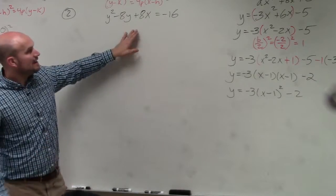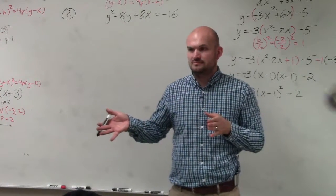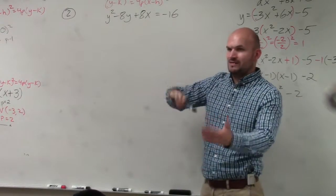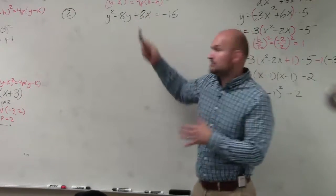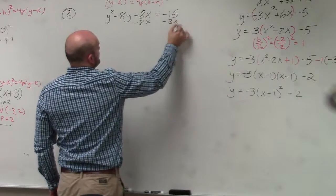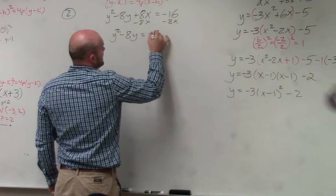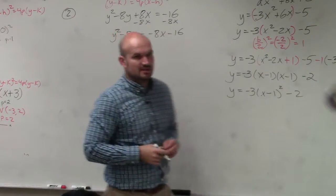All right, now notice, do you guys see how the y's are on one side, the x's are on the other side? All right, so what I'm going to do then is get the y's on one side and the x's and whatever that 4p number is on the other side. So I'll subtract an 8x. So I have y squared minus 8y equals negative 8x minus 16. Does everybody see that?